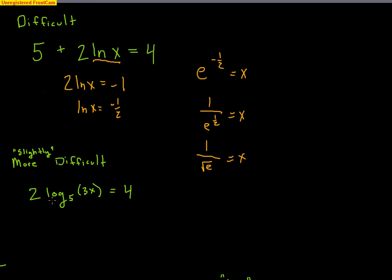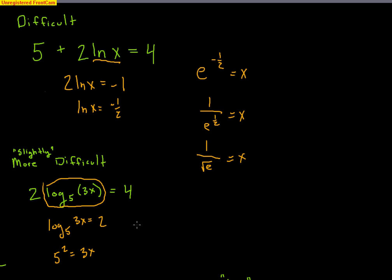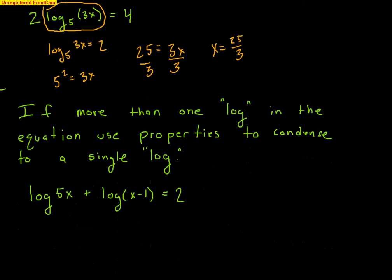Here's a slightly more difficult one. The log part is log base 5 of 3x — divide by 2 first to isolate it: log base 5 of 3x = 2. Apply the rule: 5² = 3x, so 25 = 3x. Divide both sides by 3 to get x = 25/3. Very simple as long as you apply the rules.